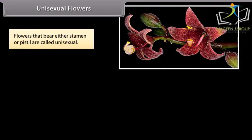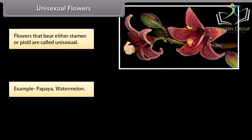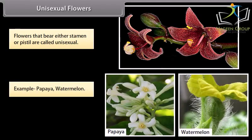Unisexual flowers. Flowers that bear either stamen or pistil are called unisexual. Example: papaya, watermelon.